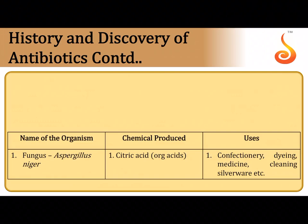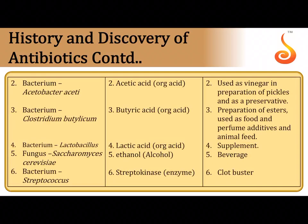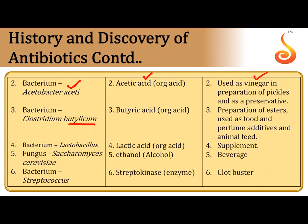Moving on to other industrial products — organic acids: the fungus Aspergillus niger gives us citric acid, routinely used in confectioneries, dyeing, medicine, and cleaning silverware. The bacterium Acetobacter aceti gives us acetic acid, used as vinegar in preservatives and pickle preparation. The bacterium Clostridium butylicum gives us butyric acid, used in preparation of esters, as a food additive, animal feed, and perfume additives.